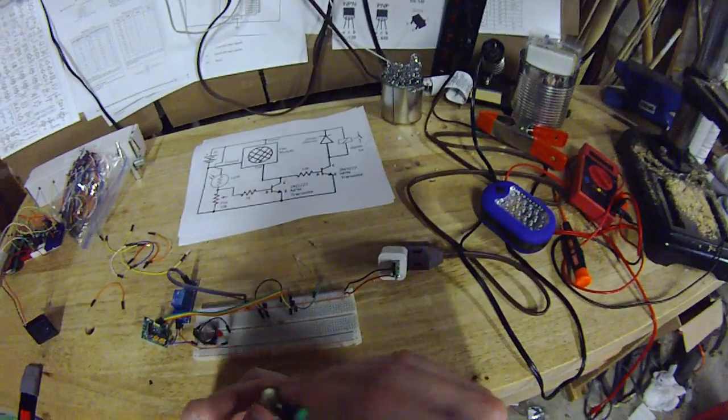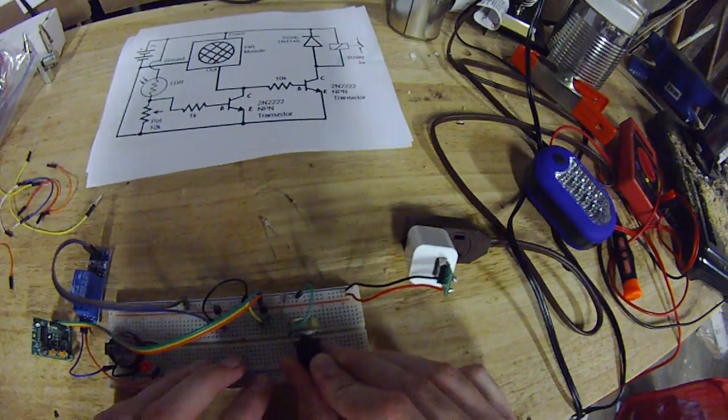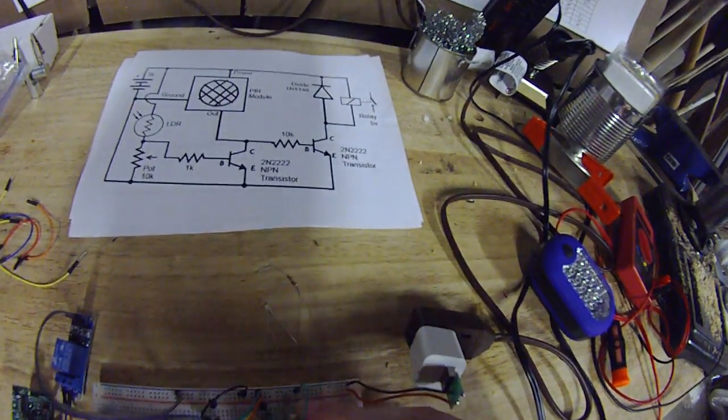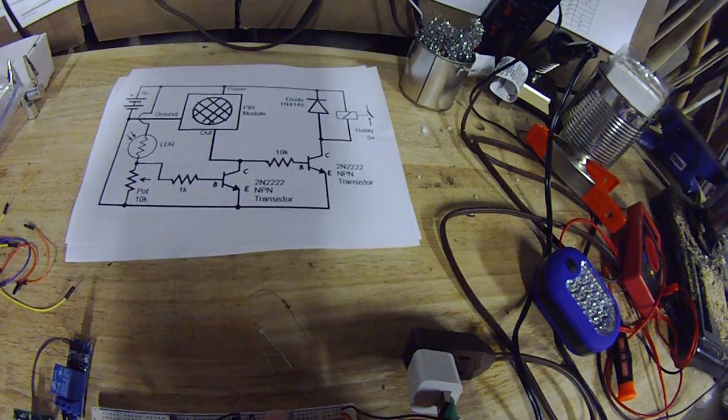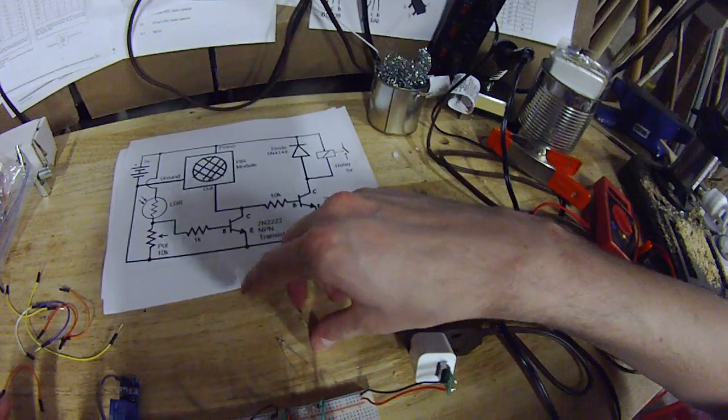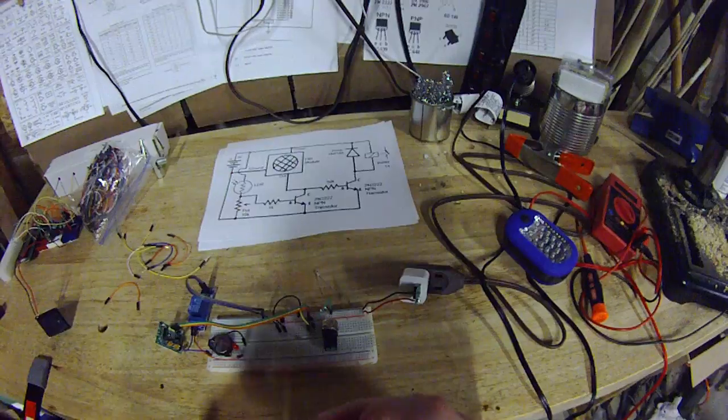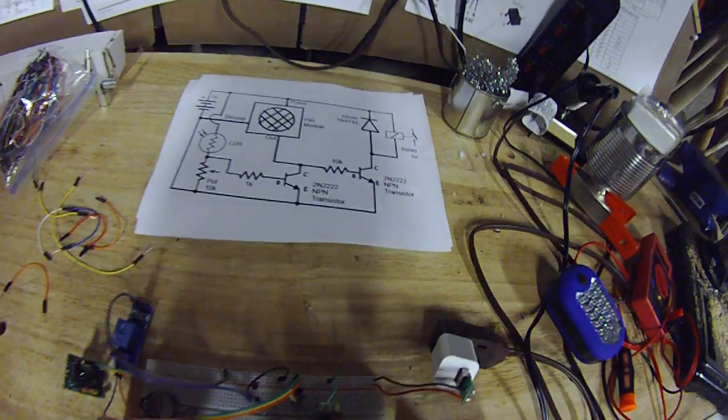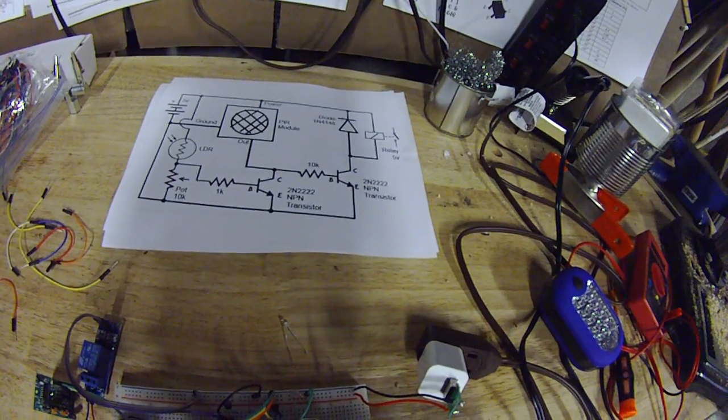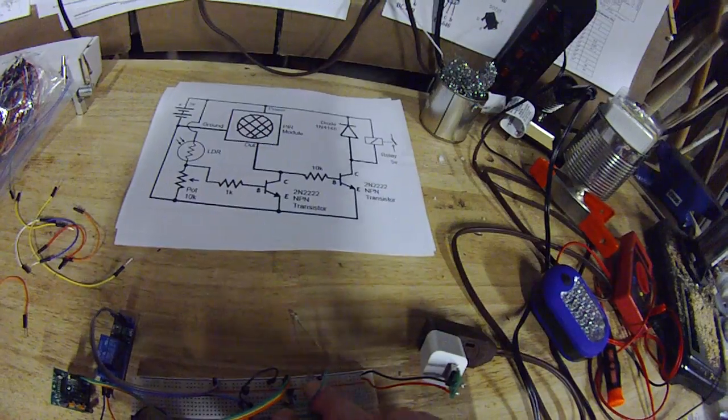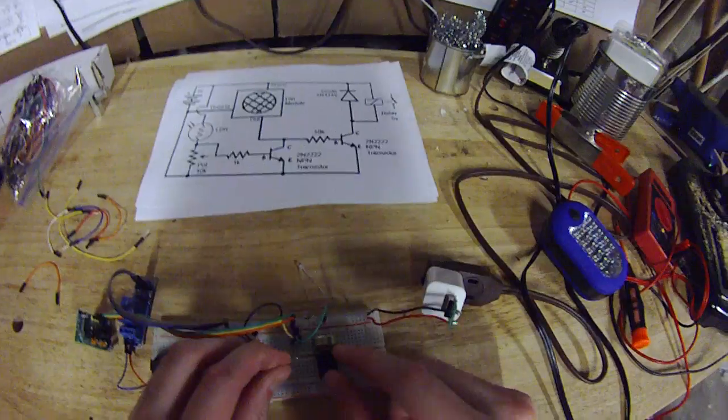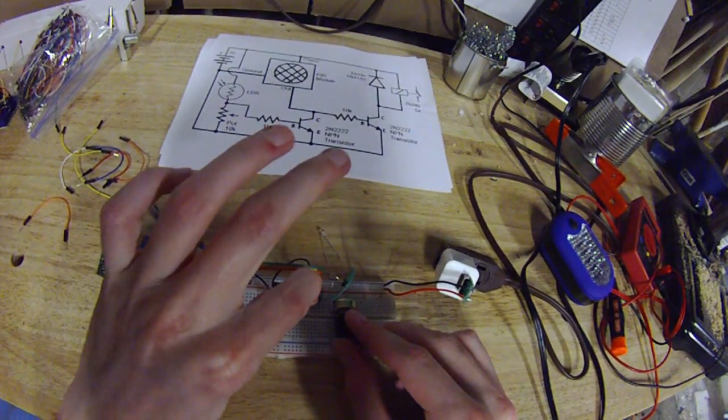And this is a 10K potentiometer. So I'm going to hook that up so that the first pin is connected to my LDR photo resistor. LDR photo resistor are the same thing. It's just two names for the same component. And then this goes from in between the two. So it's on the same row as both the pin one of my potentiometer and one leg of my photo resistor.